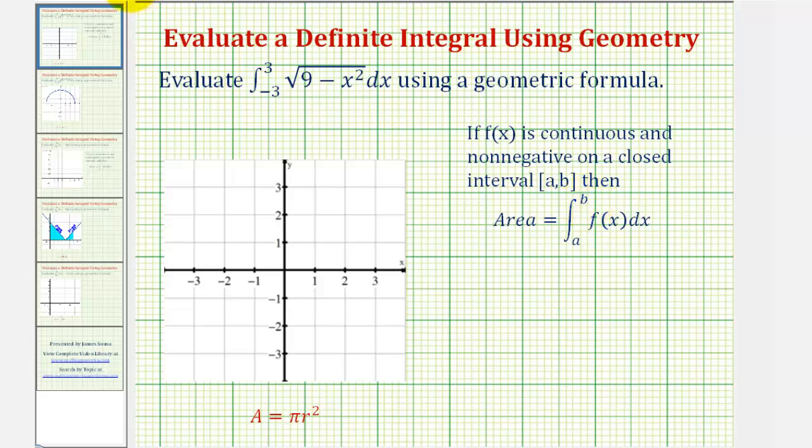The first thing we should notice is our closed interval is from negative three to positive three, given by the limits of integration. Next, our function f(x) is equal to the square root of nine minus x squared.